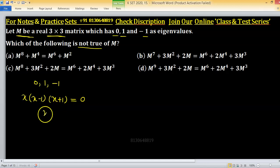After simplifying this, we have x³ minus x equals 0. We know that every matrix satisfies its characteristic polynomial by Cayley-Hamilton theorem. So M³ equals M.